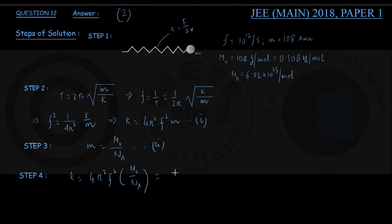And lastly we put the numerical data, that is 4 into pi square, the value of f was given above, 10 to the power 12 per second. This quantity will be squared into the molar mass of silver, 0.108 kg per mole, divided by Avogadro's number, universal constant, that is 6.02 into 10 to the power 23 per mole in 3 significant figures.